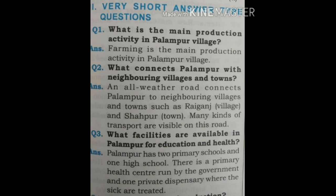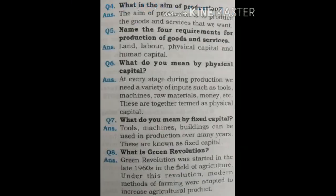Question 3: What facilities are available in Palampur for education and health? Palampur has 2 primary schools and 1 high school. There is a primary health centre run by the government and 1 private dispensary where the sick are treated. Question 4: What is the aim of production? The aim of production is to produce the goods and services that we want.